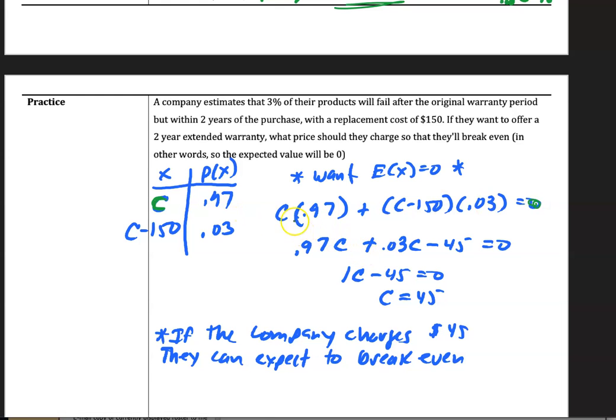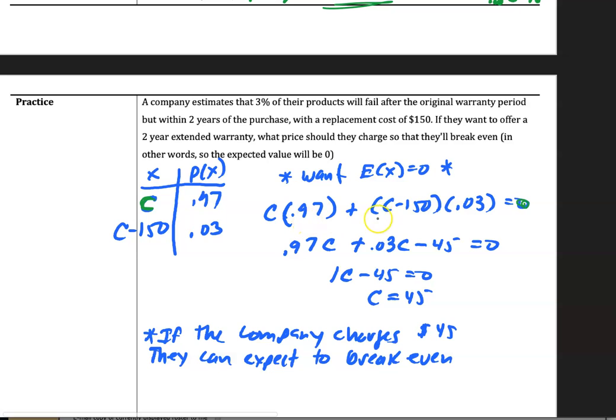So once you do this, this is a little algebra here. C times this distributive property gives you this. You combine like terms, that becomes 1, 97 cents, and 3 cents, and then you solve for C. And what you get is $45.